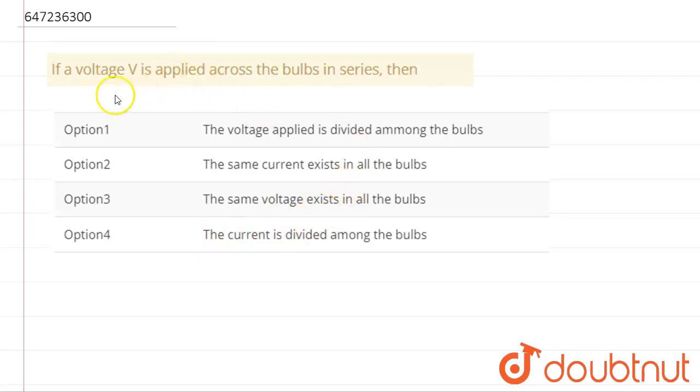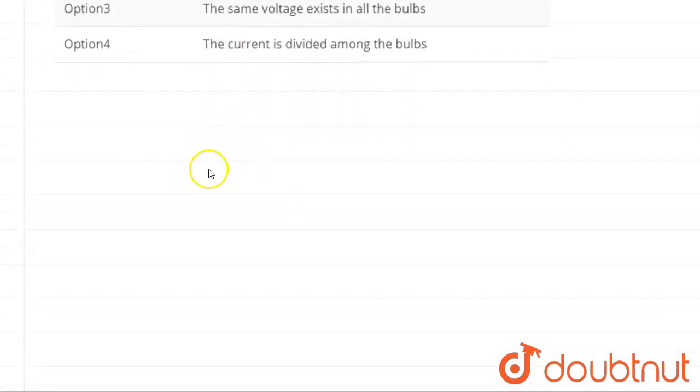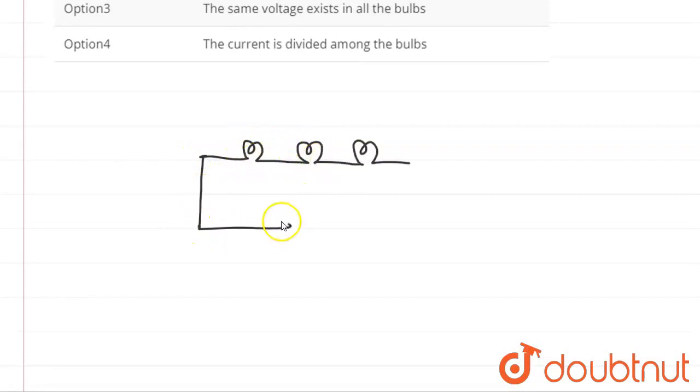First of all, we have a circuit of bulbs in series with voltage applied. This is a schematic diagram. How do we draw that? The bulbs will be something like this, and this will be the battery.